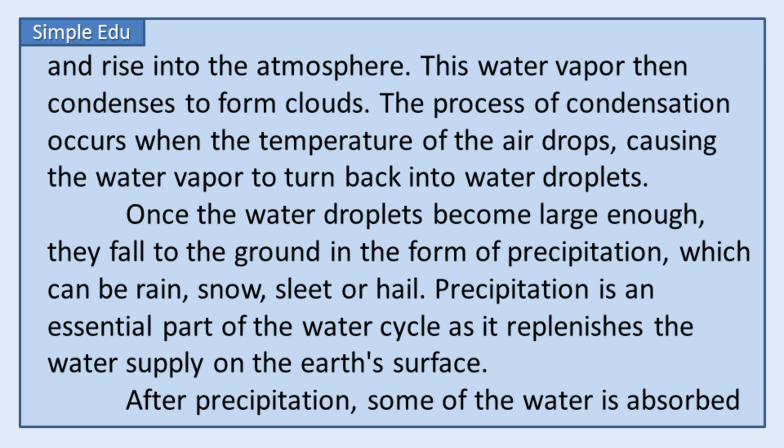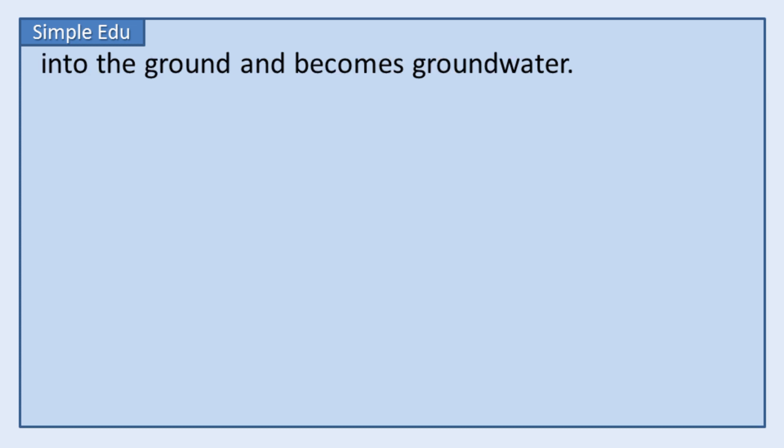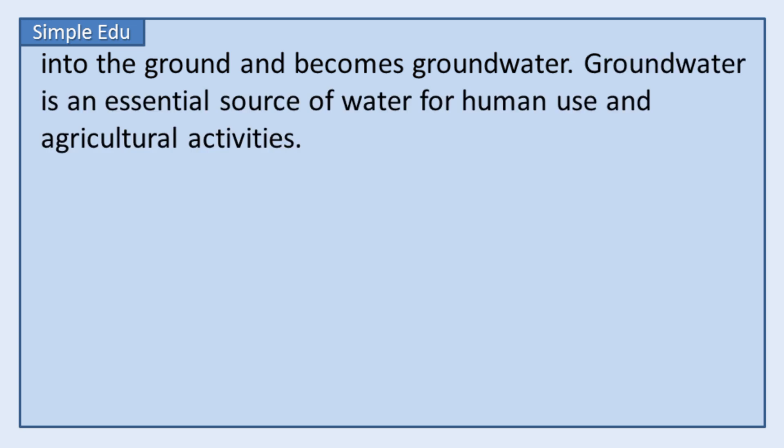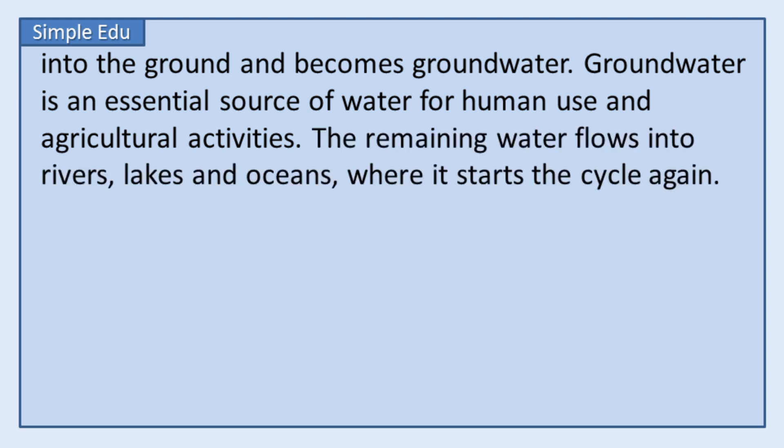After precipitation, some of the water is absorbed into the ground and becomes groundwater. Groundwater is an essential source of water for human use and agricultural activities. The remaining water flows into rivers, lakes, and oceans, where it starts the cycle again.